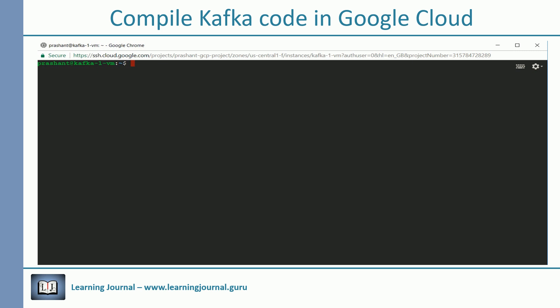SSH to your Kafka VM. Check if you already have a Java compiler by typing javac on the command prompt. You might see a message saying command not found. You can fix this problem by installing OpenJDK. Use the below command to install JDK.